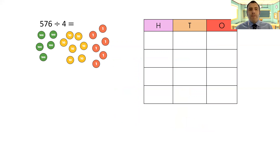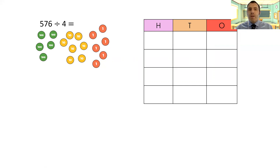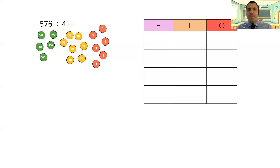Our next problem: 576 divided by four. I've got my three columns — hundreds, tens, and ones — and four rows this time because I'm dividing by four. Same process: I'm going to share the hundreds. Now, five divided by four — that's not going to share equally because I'll get one lot of four out of it and have one left that I can't divide, so I'm going to need an exchange somewhere.